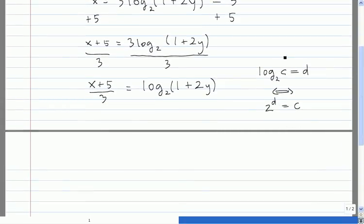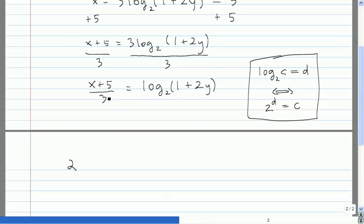So using that property, important property of logarithms, we can rewrite this guy here in exponential form. So 2, the base, 2 raised to this guy is equal to 1 plus 2y. Okay, so now we've gotten the variable that we want to solve for out of the logarithm.